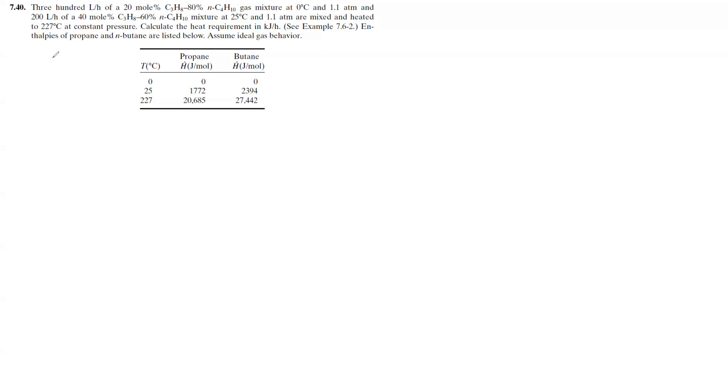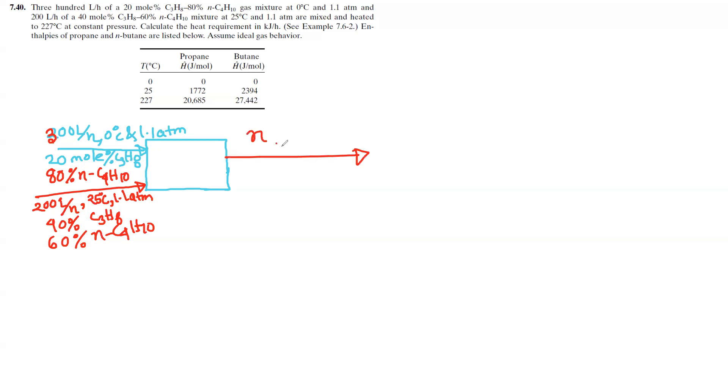Problem 7.40: 300 liters per hour of a 20 mole percent C3H8 and 80% n-C4H10 gas mixture, meaning butane and propane, at 0 degrees Celsius and 1.1 atmosphere. A second stream is 200 liters per hour, 40-60 mixture at 25 degrees and 1.1 atmosphere. The temperature is T, and it's constant pressure.